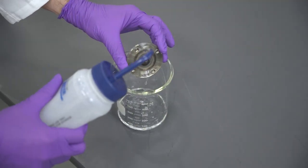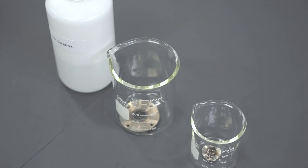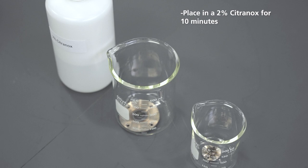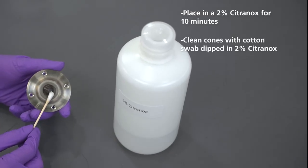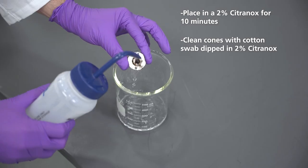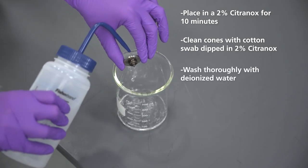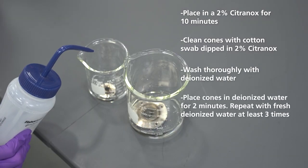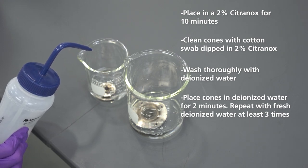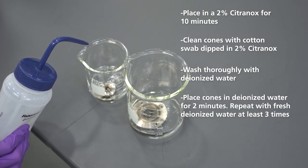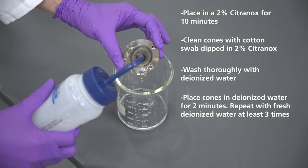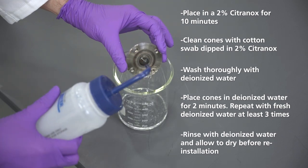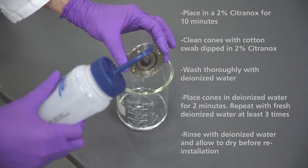For light deposit, first rinse with deionized water. Then place the cones in a 2% Citranox solution with the tips facing up and soak the cones for 10 minutes. Clean the cones with a cotton swab dipped in the Citranox solution. Wash the cones thoroughly with deionized water. Place the cones in deionized water and soak for 2 minutes to remove any residual Citranox. Repeat this with fresh deionized water at least 3 times. Lastly, rinse the cones with deionized water and allow the cones to dry before reinstallation.